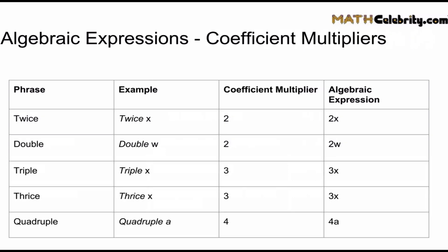Next is coefficient multipliers. Sometimes in algebraic expressions, and I think we had one on the earlier slides, they're going to use a word for a multiplier. So most of the time if you're multiplying say by 2, they're going to say two times x or two multiplied by x. But not always. Sometimes they use coefficient multiplier words. And here's the most common multiplier phrases: twice, double, triple, thrice, and quadruple.